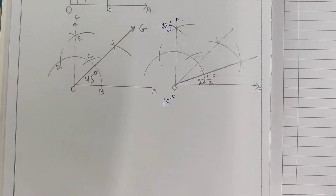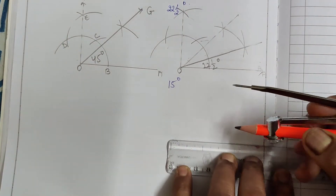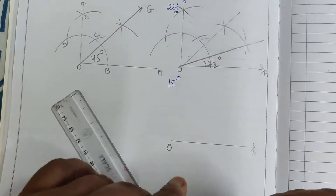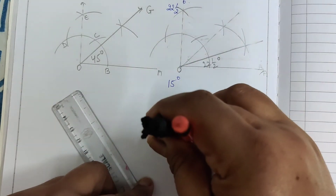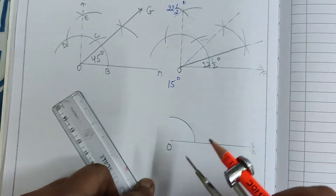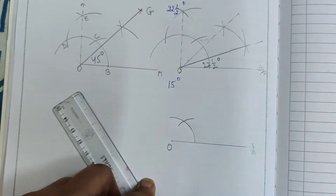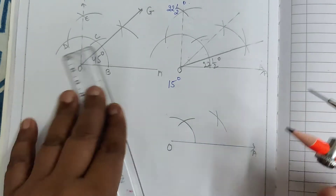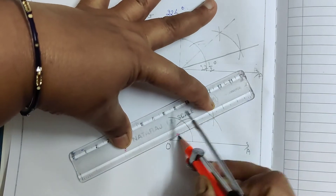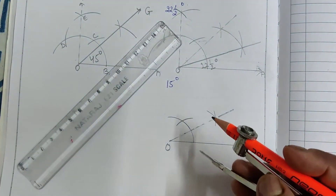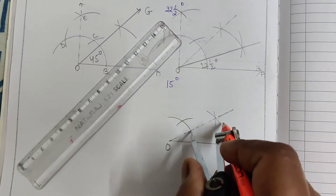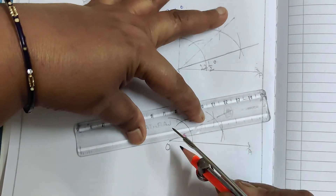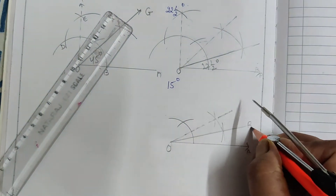Now make angle 15 degrees. First, draw a ray. Make a 60 degree angle by cutting equal arcs. Now bisect 60 degrees to get 30 degrees. This angle is equal to 30 degrees. Now bisect angle 30 degrees. This is the bisector. Join this line. Angle OAB is 15 degrees.